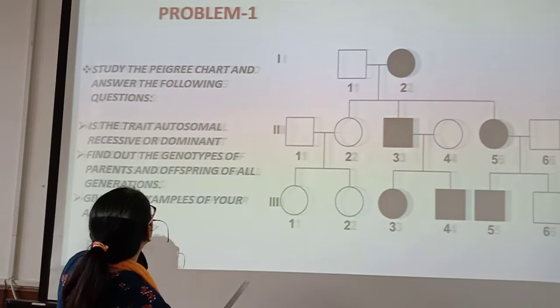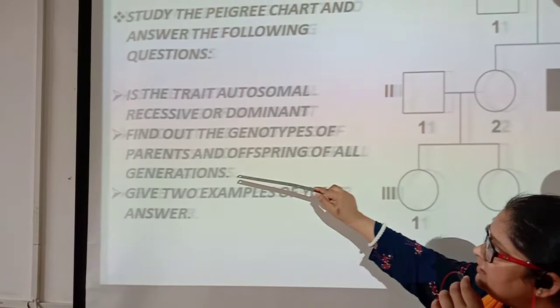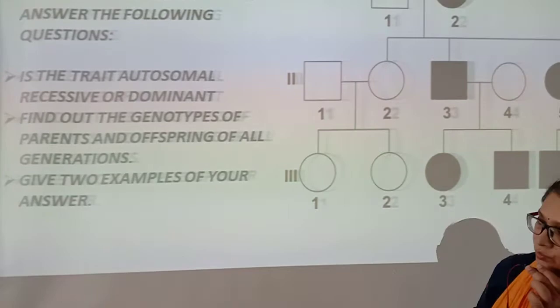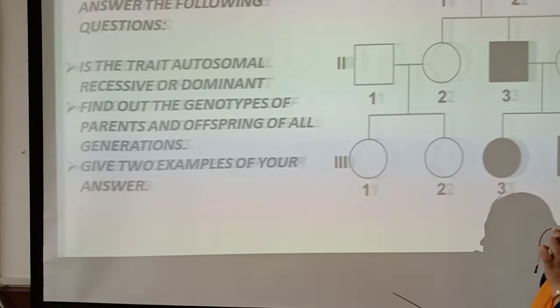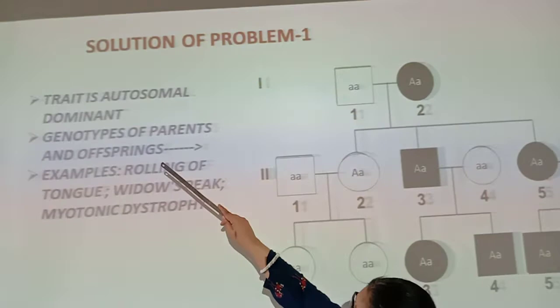The questions asked include: Is the trait autosomal recessive or dominant? Find the genotypes of parents and offspring of all generations. Give two examples in support of your answer — if your answer is autosomal dominant, give examples of autosomal dominant traits, and if autosomal recessive, give examples accordingly. Now let us look at the solution of problem one — this is an autosomal dominant trait.